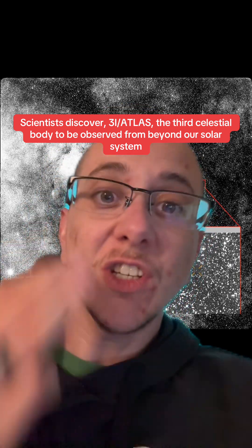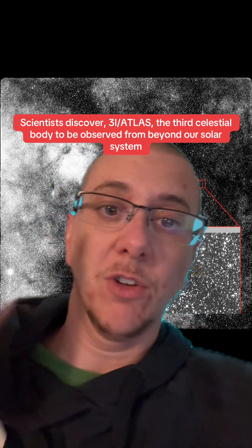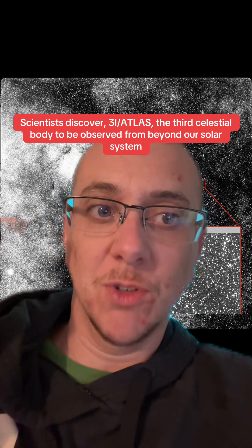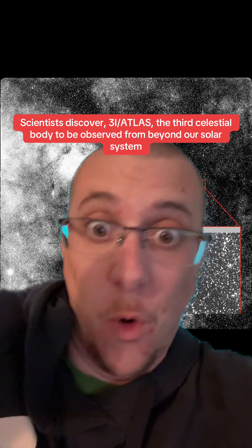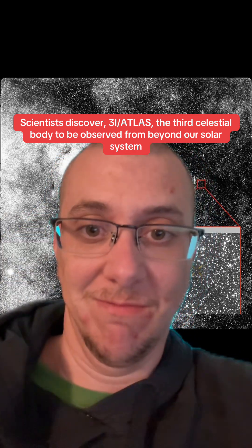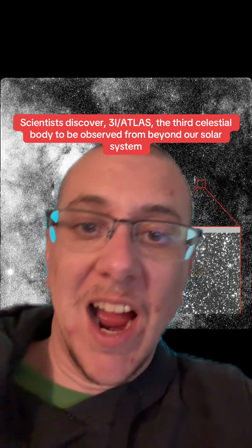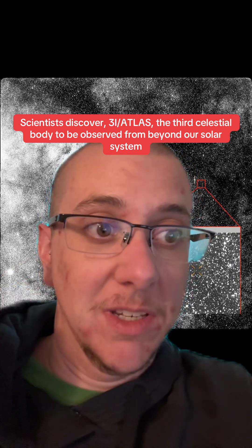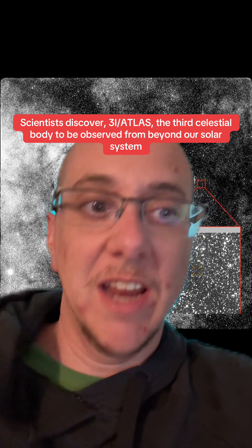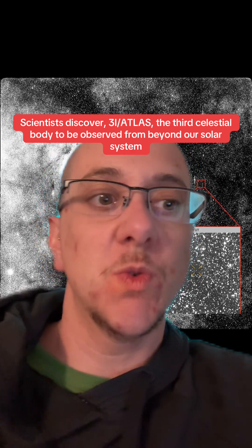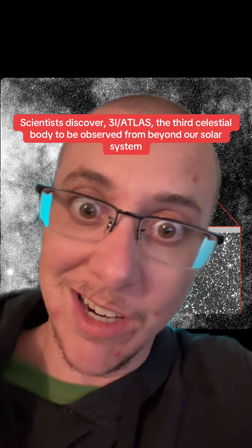So this is the third celestial body from beyond our solar system ever to be observed in our corner of the universe where we can actually see it. This is named 3I Atlas because it was discovered by the Atlas Asteroid Terrestrial Impact Last Alert System in Chile.